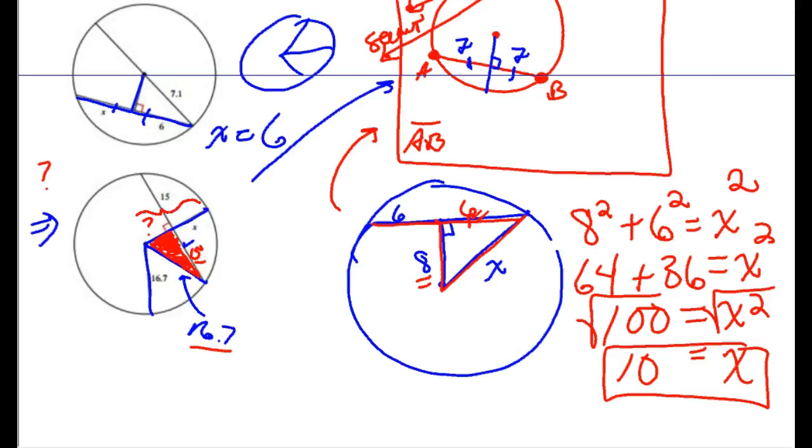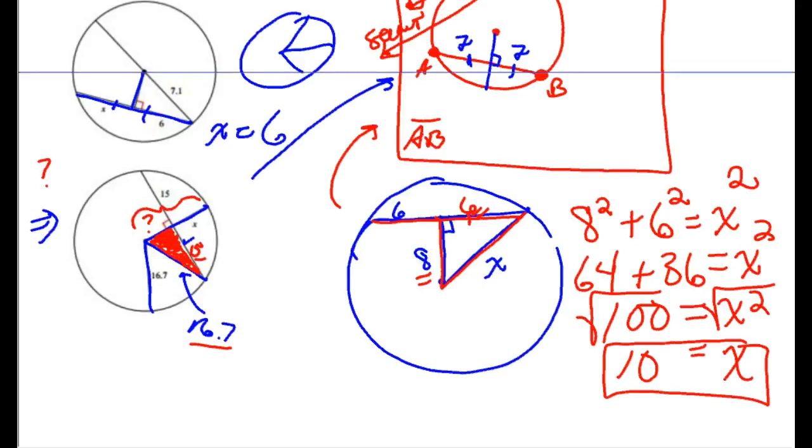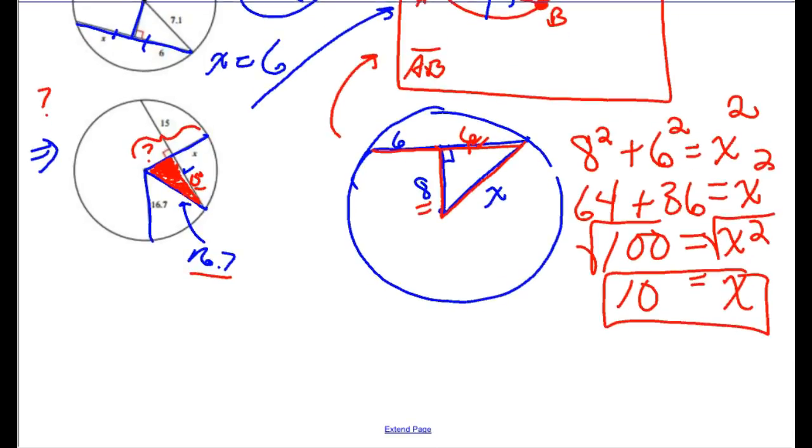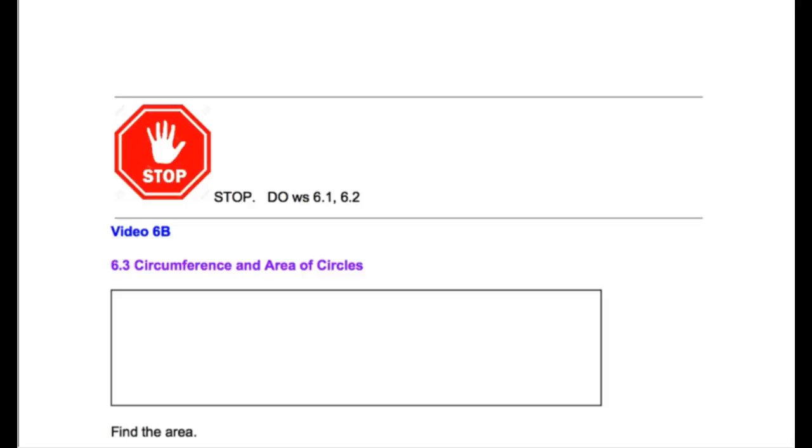And then that's also a radius. So if I can get question mark with the Pythagorean theorem, I can do 16.7 minus it to get X, but that's a little bit beyond the scope of difficulty that we need to be able to do. And I believe I'm at a stop sign here. I think I'm getting close. I think that might be it for this video. Stop and do worksheets 6.1 and 6.2. Have a good one.